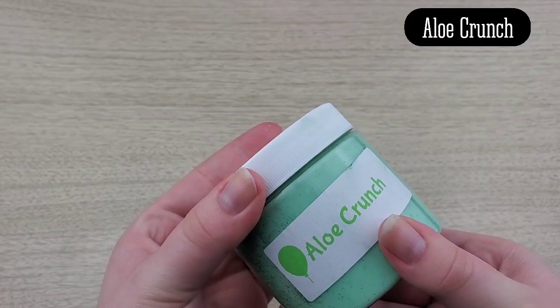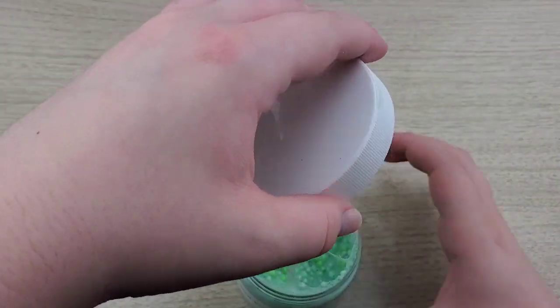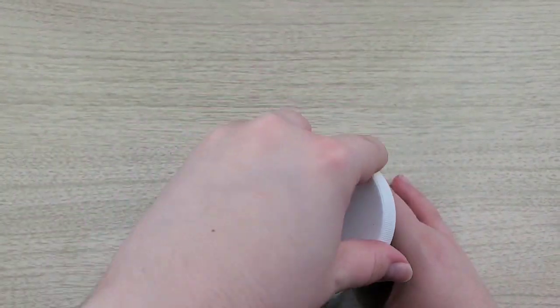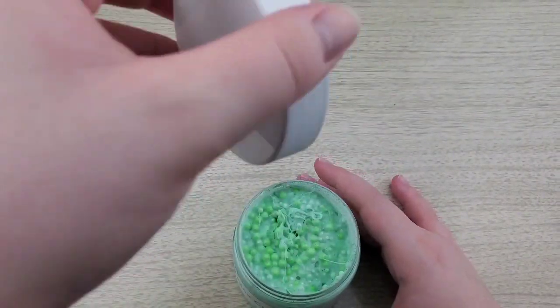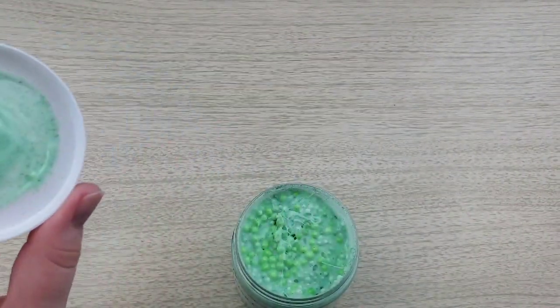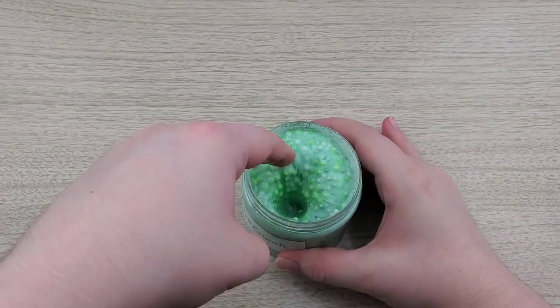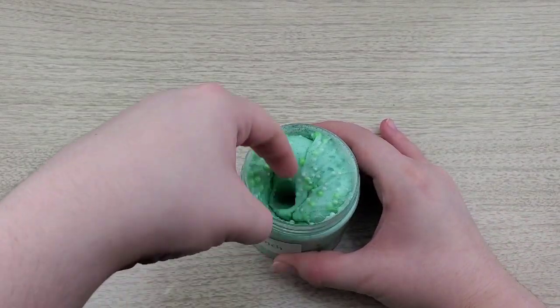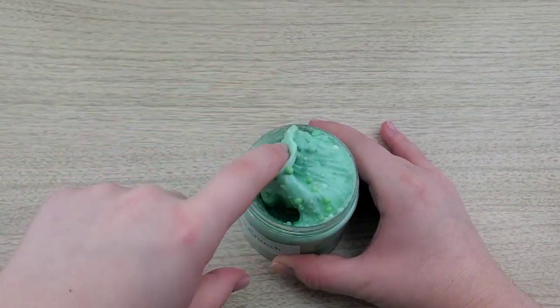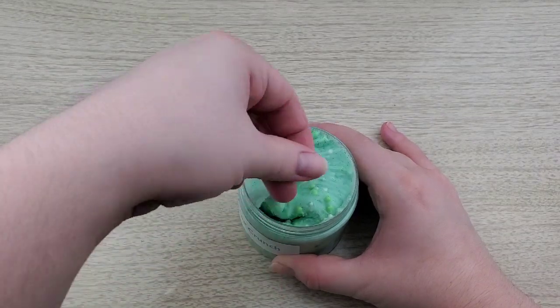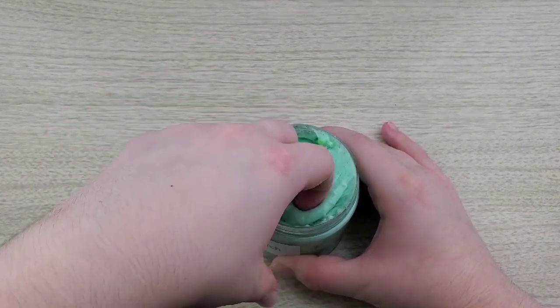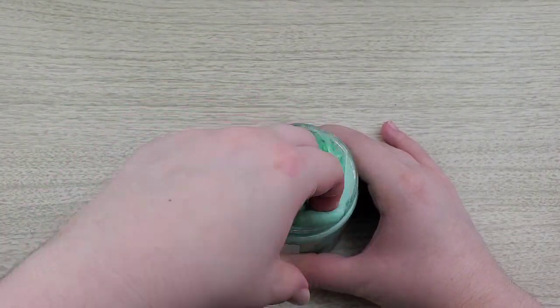This last slime is Aloe Crunch. And like I said, this one is scented as well. It smells pretty much like aloe and lotion. And this one is pretty much the same as the first one. So like I said, the first one, instead of saying that it's a crunchy slime, maybe a semi slushy. Or if you want to change it, I personally think that this one and the first one would be absolutely amazing as full floams. Because that would just be great, especially with the scent.